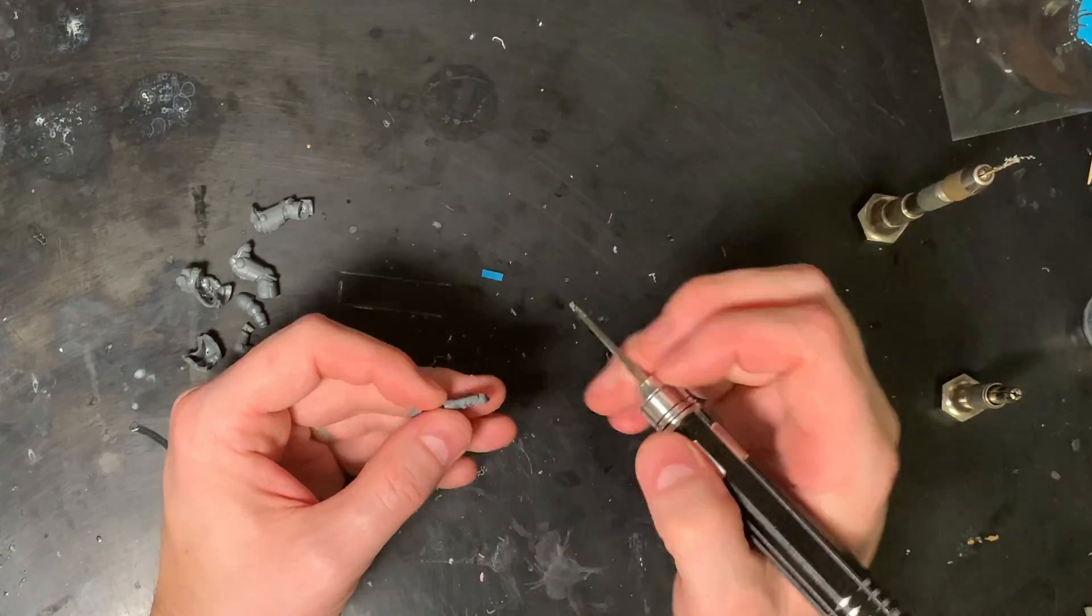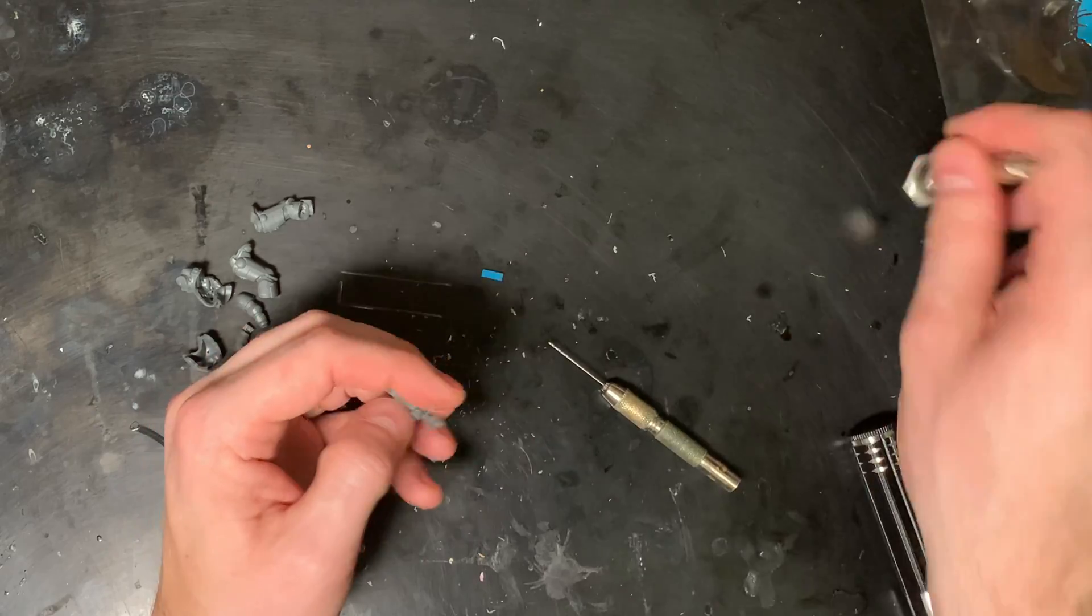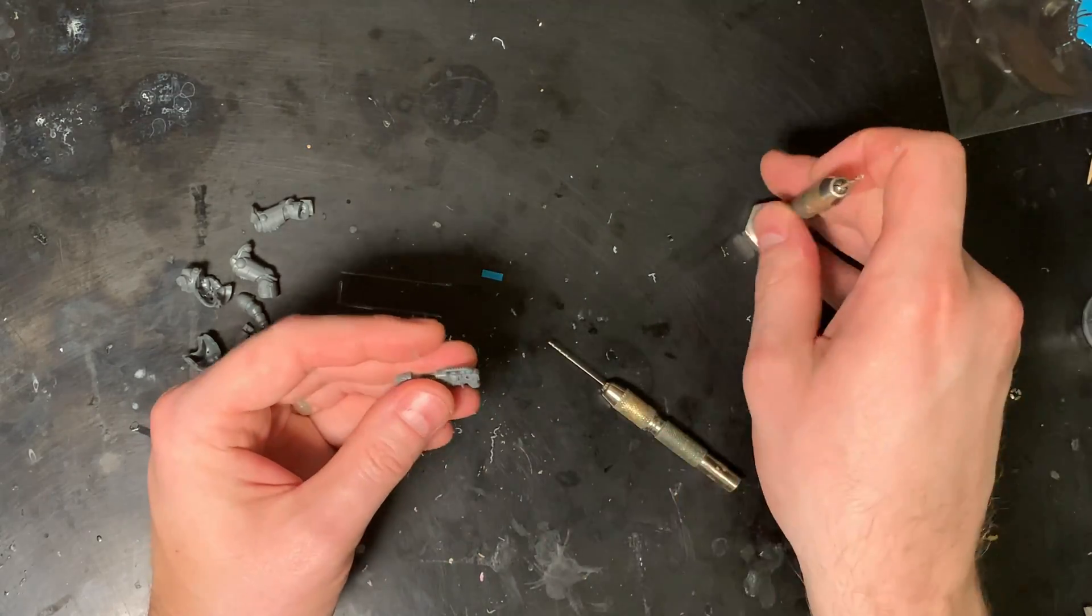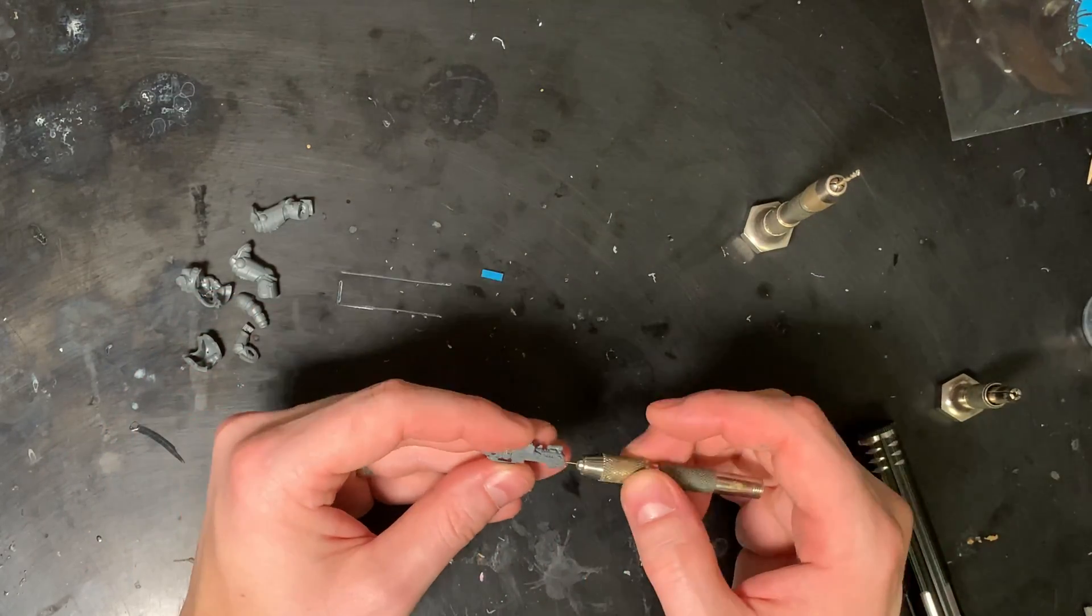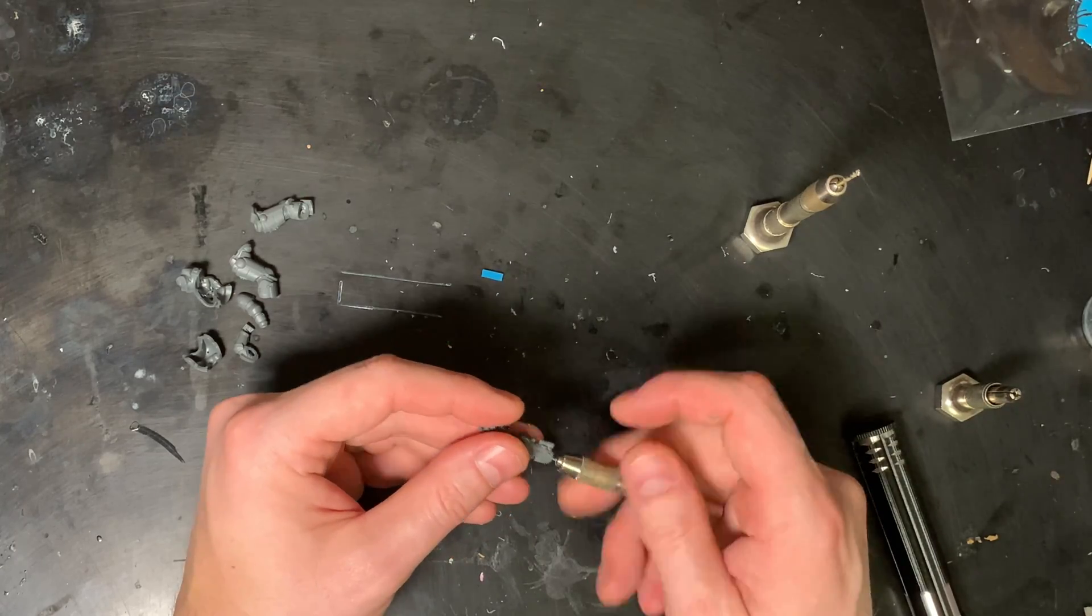The key with this is to go slow and clear chips often. Just doing a final fit and finish. I want to make sure that I don't have any ugly surprises when I'm trying to put the LEDs in, or when I'm trying to epoxy on the plasma coil.